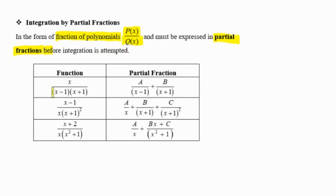When we have two different factors, we separate them one by one to find the partial fractions. When we have a repeating factor, the first factor will be power of 1 and the second factor will be squared. When we have a quadratic factor, the numerator part must be a linear numerator, which is Bx plus C. So this is our basic review of partial fractions.